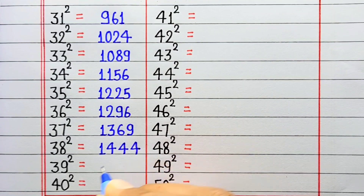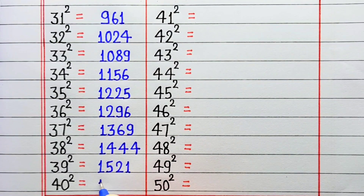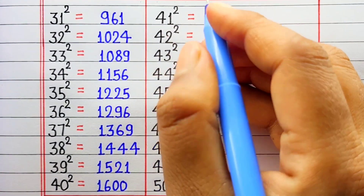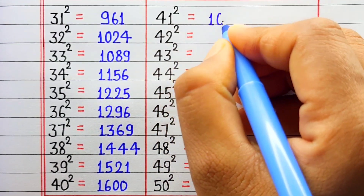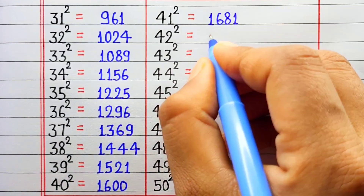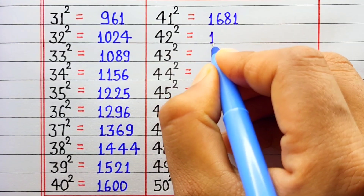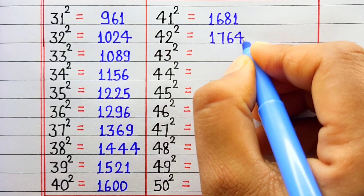Square of 39 is 1521. Square of 40 is 1600. Square of 41 is 1661. Square of 42 is 1764.